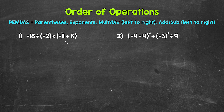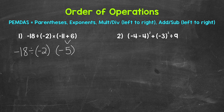Negative 11 plus 6 gives us negative 5. We start at negative 11 and add 6, so we are increasing in value by 6 and get negative 5. Now we have negative 18 divided by negative 2 times negative 5. I'm keeping some of the negatives within parentheses — that helps us stay organized and not confuse any negatives for subtraction or forget any negative signs.